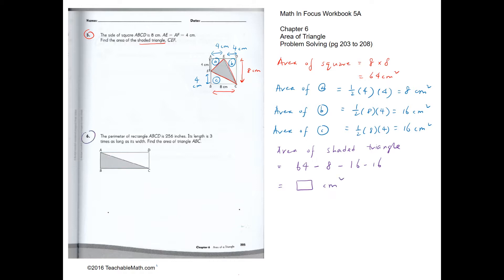Question 6: the perimeter of rectangle ABCD is 256. The length is three times the width. If the width is one unit, the length is three units. Together there are eight units in the perimeter, so eight units equals 256.